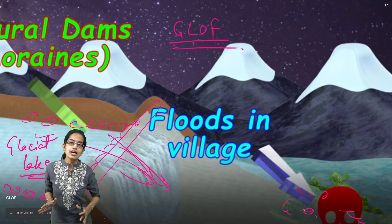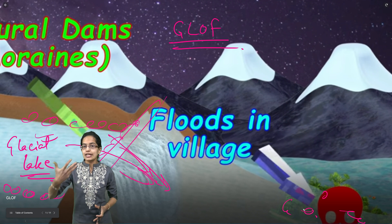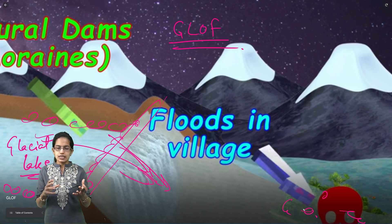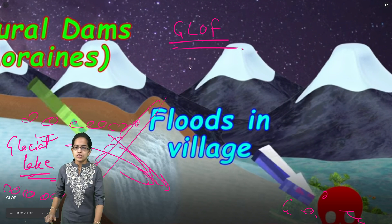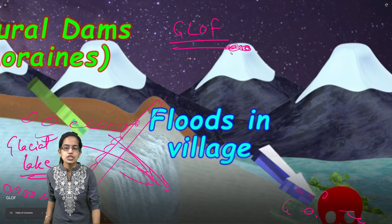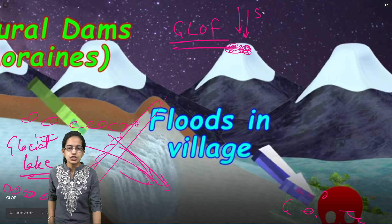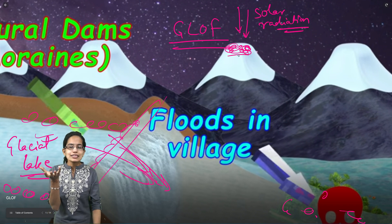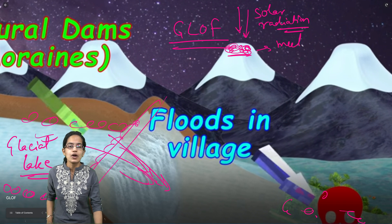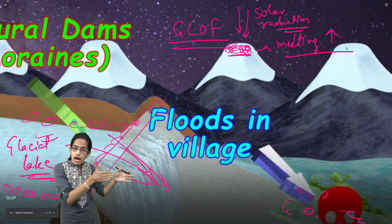We have covered the class on GLOF separately and this is a snapshot from that section, so you can visit that lecture for more details. Sometimes due to higher atmospheric pollution, black carbon deposits on the glacier. As black carbon deposition increases, the amount of solar radiation incoming from the sun increases, the glacier starts to melt at a faster pace, and the rate of melting increases, leading to higher probability of flash floods.